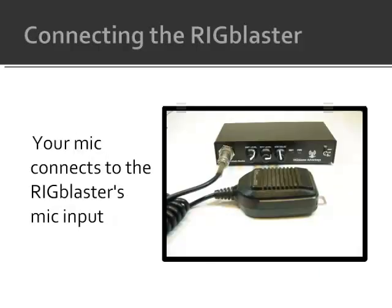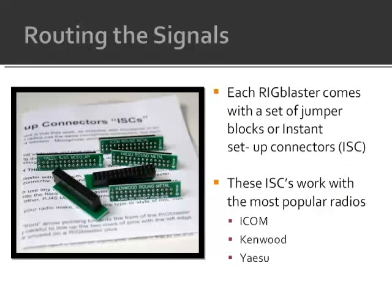Because the microphone connects to the Rig Blaster's mic input, it's easy to switch back and forth between digital and voice modes simply by keying your mic. Since many radio manufacturers use a standard 8-pin screw-on mic connector but wire them differently, the Rig Blaster comes with a set of pre-configured jumper blocks to route the signals correctly.